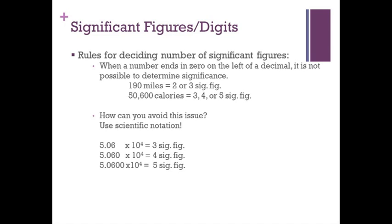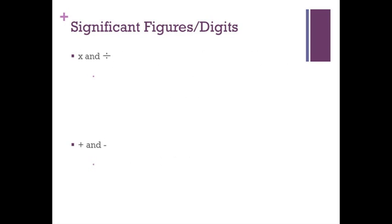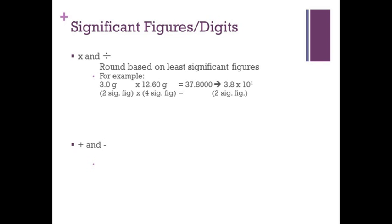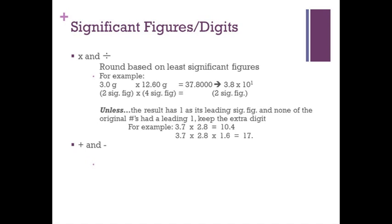The last thing we need to go over is dealing with calculations with varying levels of significant digits and uncertain figures. For multiplication and division, the final value is dependent on the fewest significant digits of the operator. For example, we have 2 significant figures times 4 significant figures, so our final answer has to be only 2 significant figures. The exception to this rule is if the calculation results in a leading 1, when no 1s were in the original problem. In that case, we keep the extra digit. So if you look at the problem here, 3.7 times 2.8, giving us a 10.4, versus 3.7 times 2.8 times 1.6, resulting in 17.